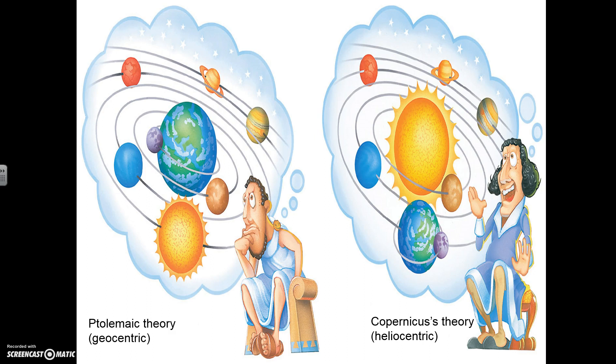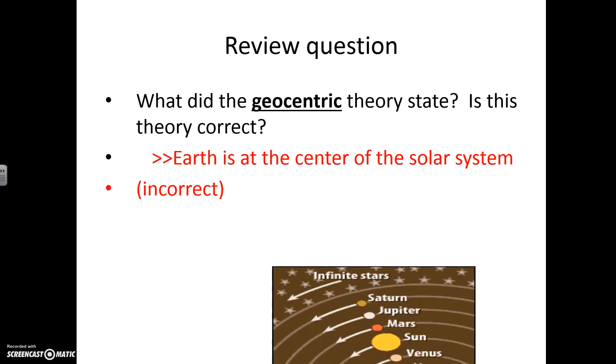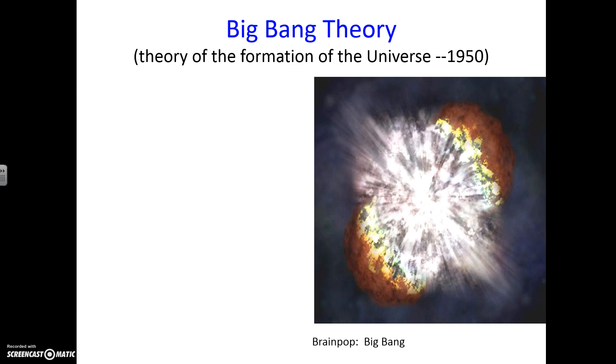So you should also have this on your paper. However, you can label it if you want to with the Ptolemaic theory. This is geocentric with the Earth in the middle. And then Copernicus's theory is heliocentric with the sun in the middle. We say that heliocentric is mostly true because we know that the planets have different patterns in their orbit around the sun, and he thought that they were all circular, which, of course, we know is not true. So what did the geocentric theory state? Is this theory correct? You should know this. It stated that the Earth was the center of the solar system, and, of course, we know this is incorrect.